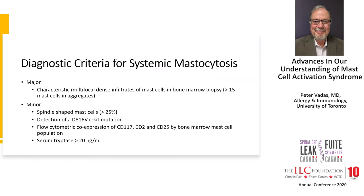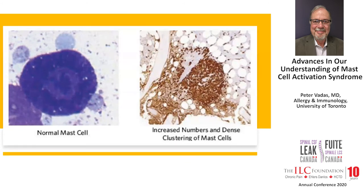There are diagnostic criteria established by the World Health Organization for systemic mastocytosis. I want to point out that there are very clear, rigorous distinctions between systemic mastocytosis and the kinds of mast cell activation syndromes we see in the context of EDS and POTS. A normal mast cell is shown to the left; on the right, clusters of abnormal spindle-shaped mast cells form aggregates, typically occurring in bone marrow beside bony trabeculae.